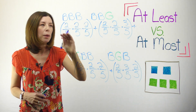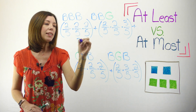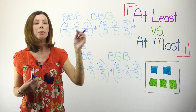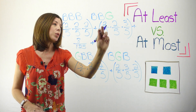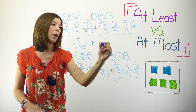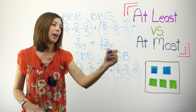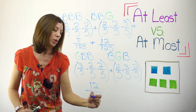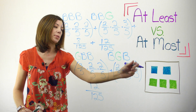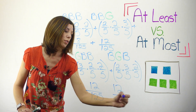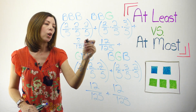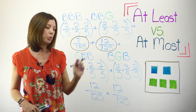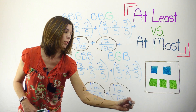For blue, blue, blue that gives me eight one-hundred-twenty-fifths — five times five times five is 125, and two times two times two is eight. Adding to that, two times two times three is twelve, so twelve one-hundred-twenty-fifths for blue, blue, green. Then three times two times two gives me another twelve one-hundred-twenty-fifths, and two times three times two also gives me twelve one-hundred-twenty-fifths.